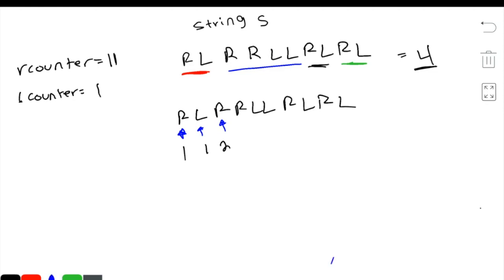R counter here becomes a three. L counter here becomes a two. I can actually underline this to make it easier to see. Come here, R counter becomes a three. Come over here, R counter becomes a four, five, and five. So this is a very simple problem.